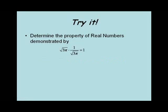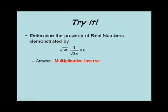Let's try another. Which property is illustrated by the equation square root of 3 pi times 1 over the square root of 3 pi equals 1? The answer is the multiplicative inverse property.